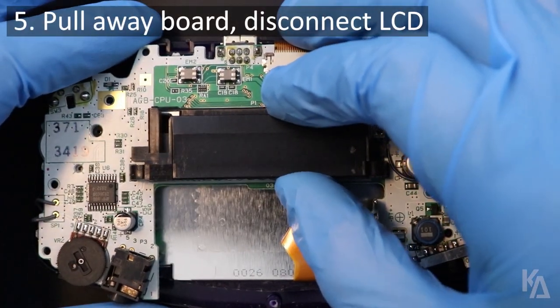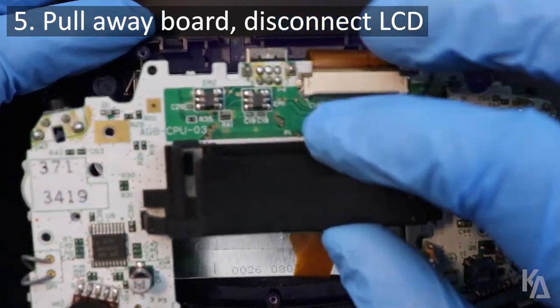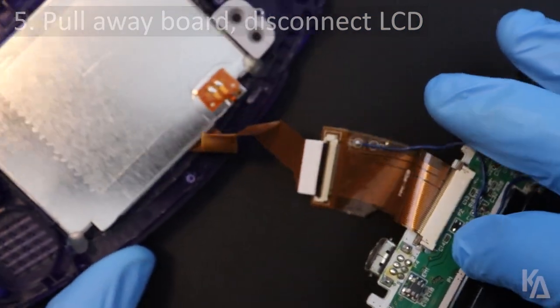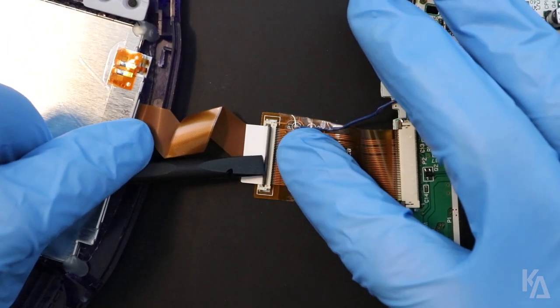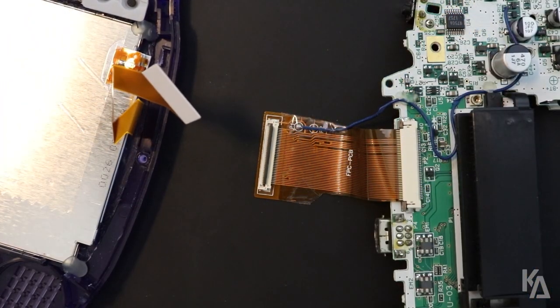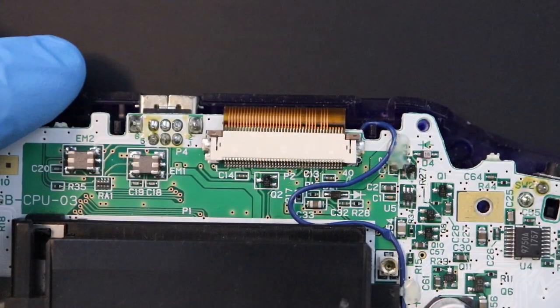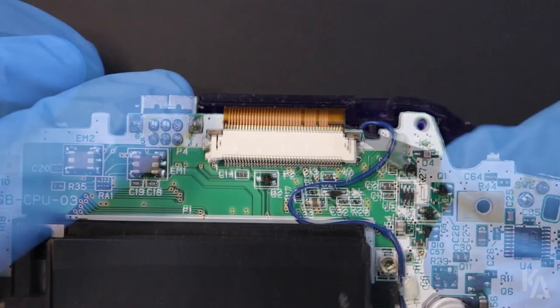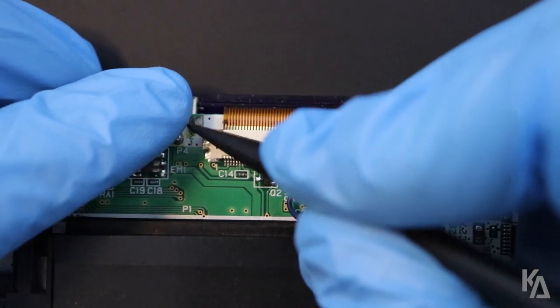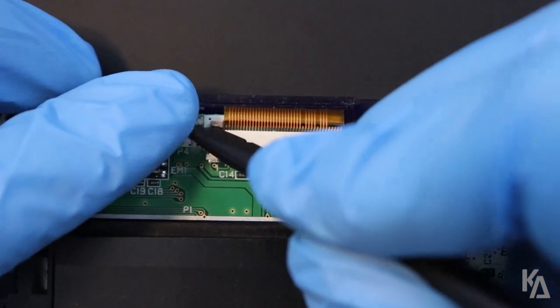Once that's complete, slowly pull the board away from the front housing and carefully disconnect your LCD ribbon. For those of you with unmodded systems, the place to disconnect your LCD from is this socket right here. Be sure to do this before pulling the system board away from the front of the shell.